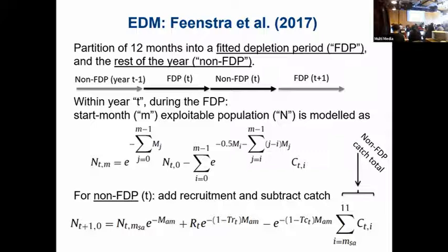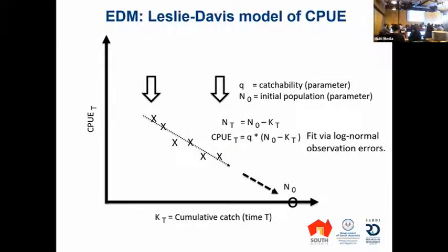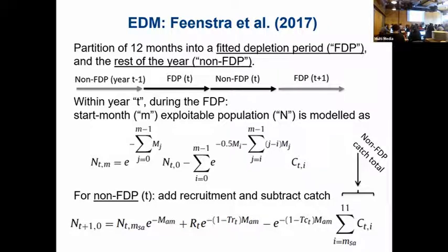Here's basically the meat of that extension model. That first equation is just the depletion model — year T in the bolded part of the slide. FTP, Fitted Depletion Period, means you can have a fishing season that is X number of months long. But if you have only three months with severe depletion and no recruitment, and catchability may be considered not varying too much over that period, then you can probably apply this method. There are some other assumptions coming up as well.